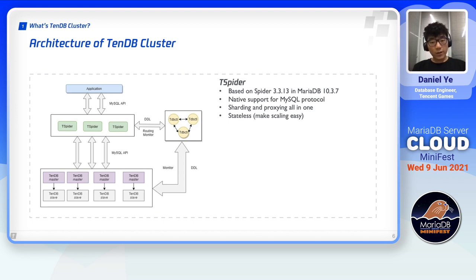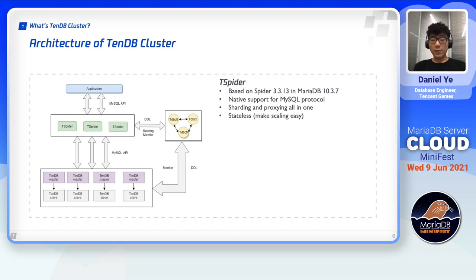Since T-Spider itself doesn't store actual data records, it only stores database and table structure, so it's almost stateless. This allows us to horizontally scale T-Spider with very little trouble.